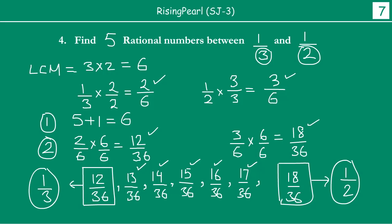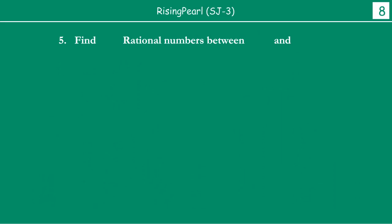Friends, before we wrap up, let's take one more example. This time we will take one positive number and one negative number. Let's say we need to find between -1/2 and 1/4, if we need to find 7 rational numbers between these two. How are we going to approach it?